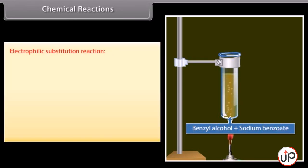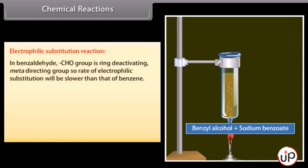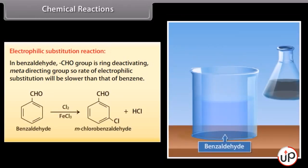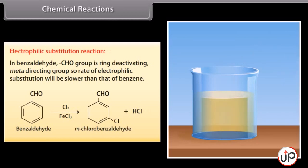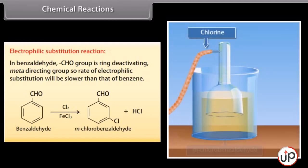Electrophilic substitution reaction: in benzaldehyde, the aldehyde group is a ring-deactivating meta-directing group, so the rate of electrophilic substitution will be slower than that of benzene. Benzaldehyde reacts with chlorine and ferric chloride solution to form meta-chlorobenzaldehyde and hydrochloric acid.